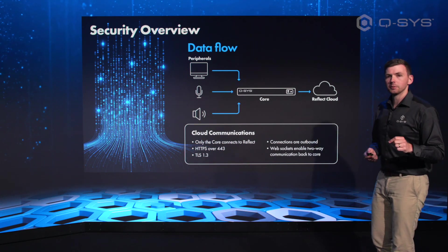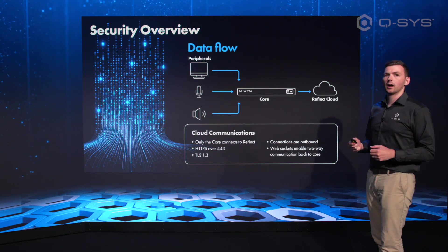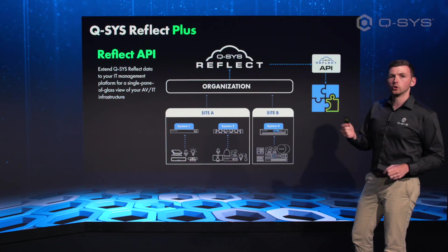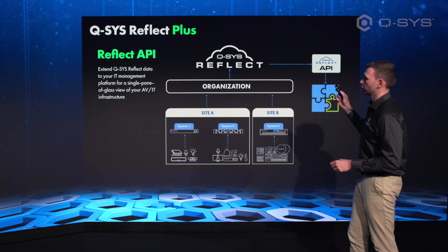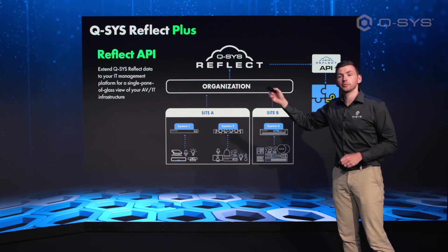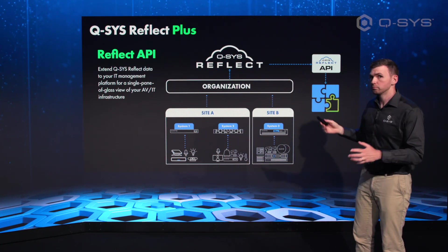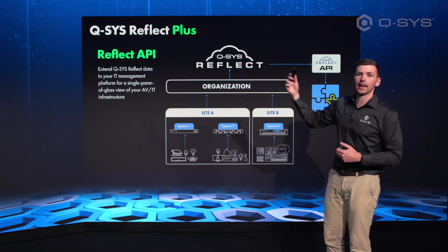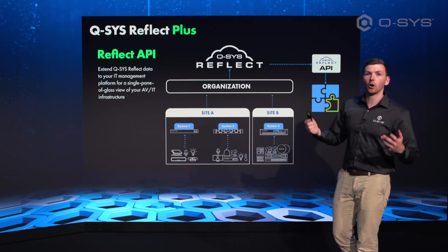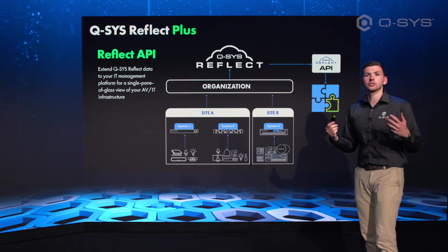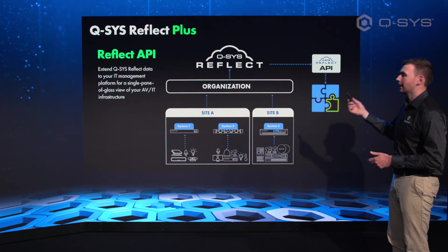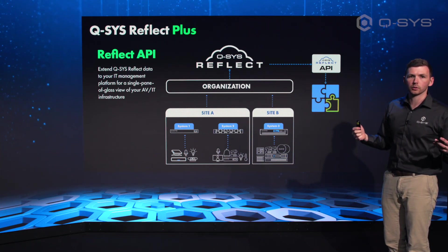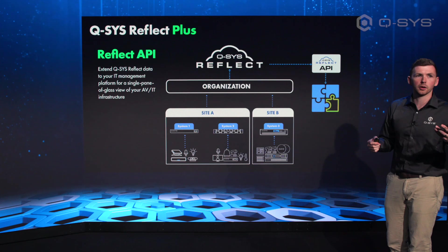From an IT perspective, there's also an API. With a single API call you can go to the Q-SYS Reflect cloud and get all the information about maybe just one site or one system, or actually a huge amount of data about your whole organization's AV health and bring that into an IT dashboard — like something like ServiceNow, for example.